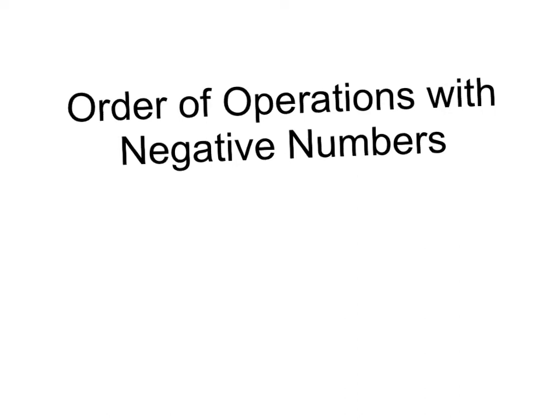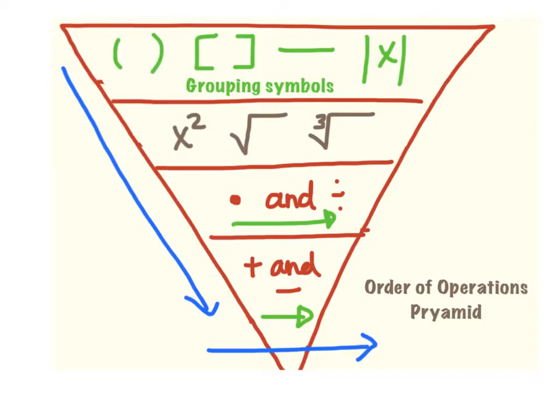Hey guys, this video is going to go over some more order of operations problems, but this time we are going to throw in some negative numbers. So first thing, just a quick refresher, here is our order of operations. Remember our first steps are grouping symbols, then exponents, multiplying and dividing left to right, and then adding and subtracting left to right.